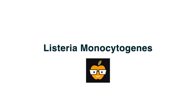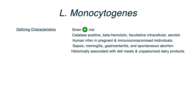The next pathogen in my microbiology series is Listeria monocytogenes. This is a gram-positive rod, it's catalase positive, beta-hemolytic, it's a facultative intracellular, and it's aerobic.